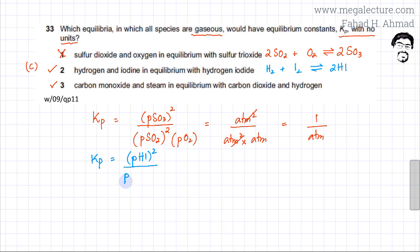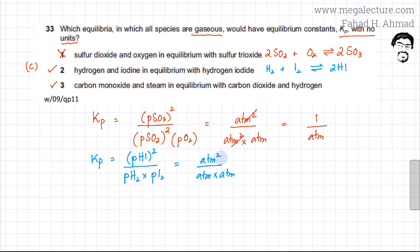Putting in the units: ATM squared on top divided by ATM multiplied by ATM on the bottom. The units cancel out — ATM squared divided by ATM squared — so this reaction gives Kp with no units.